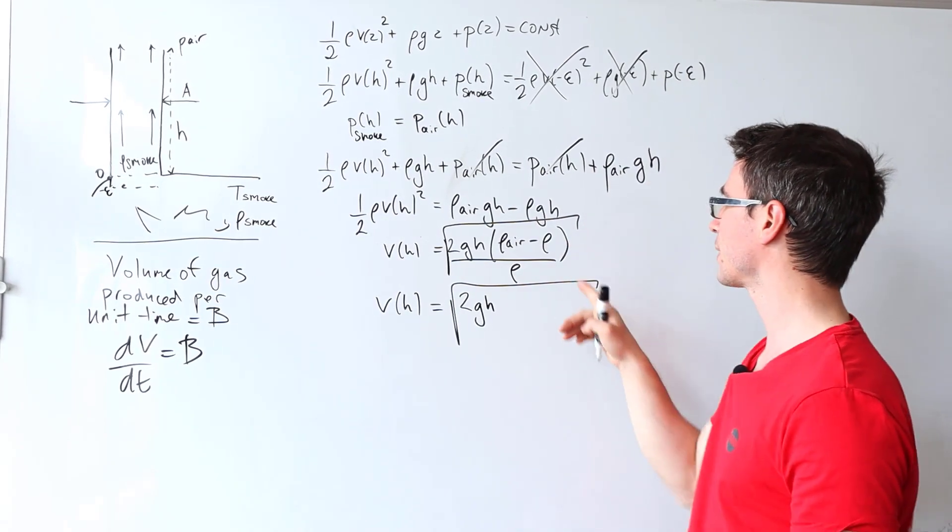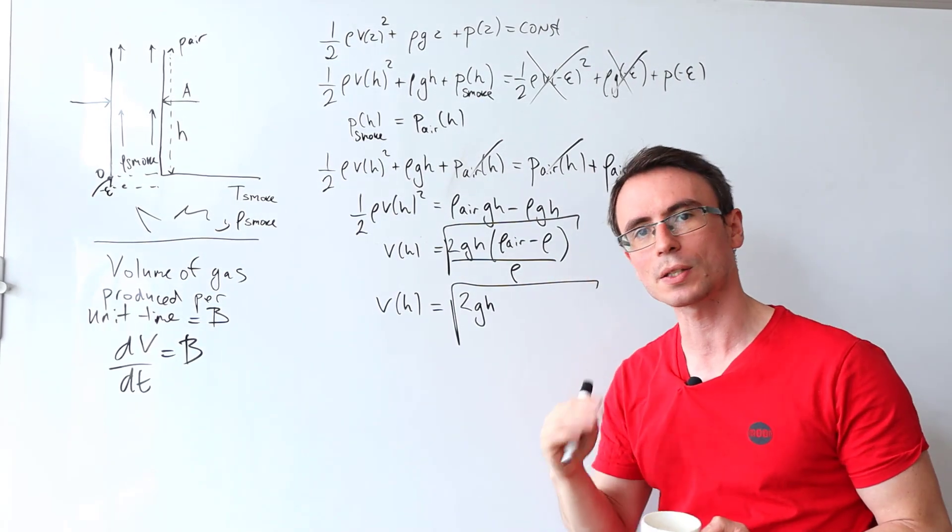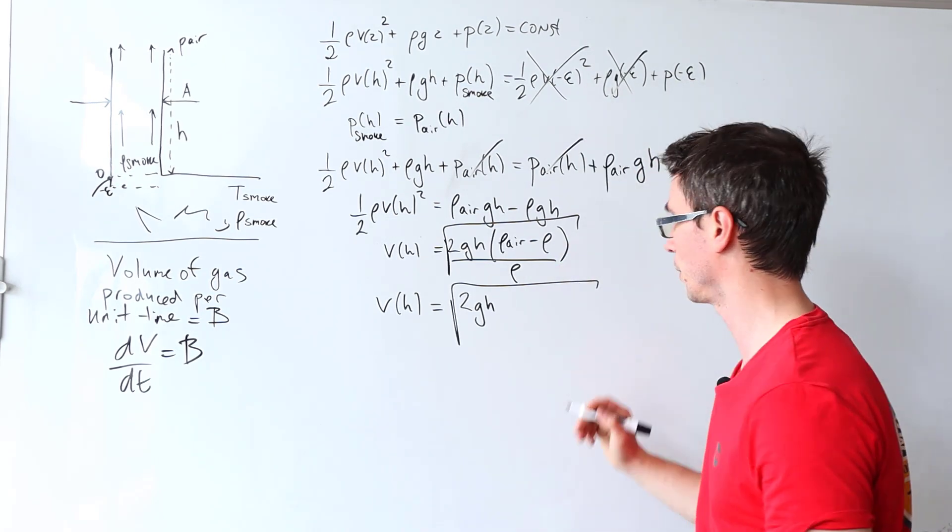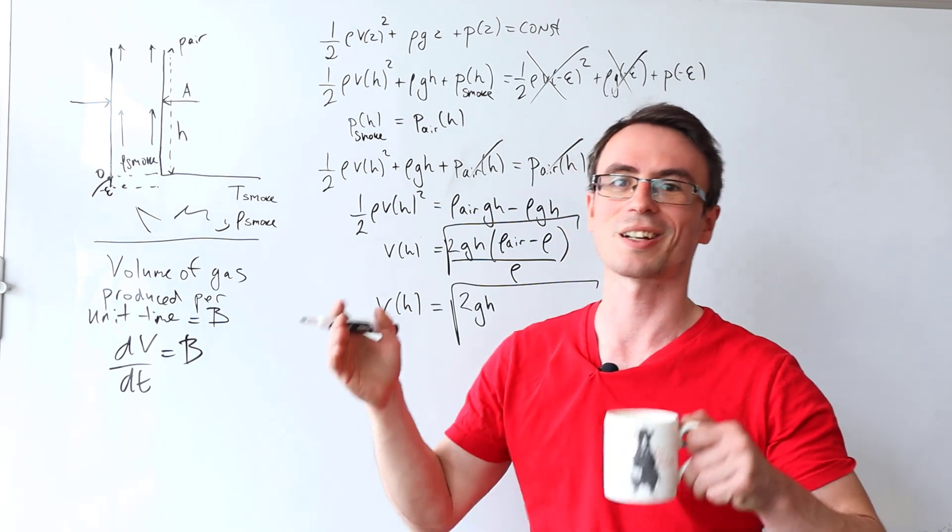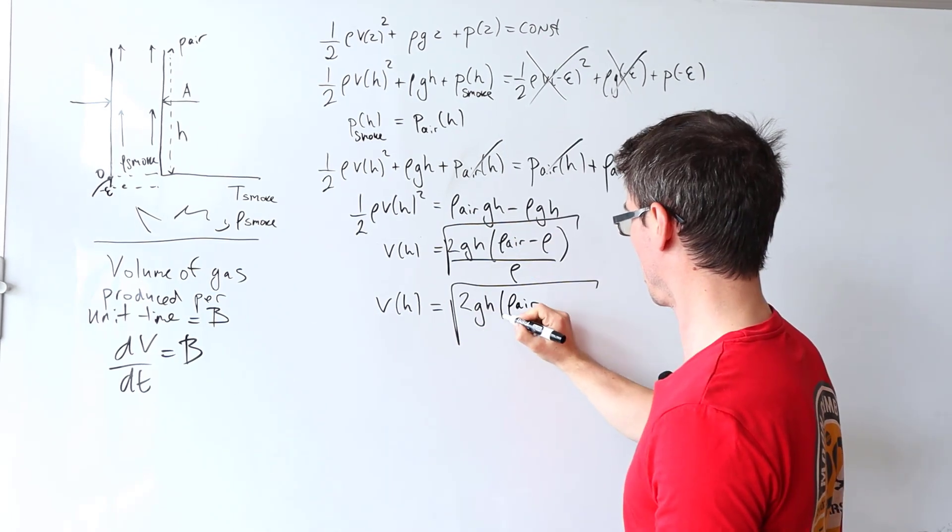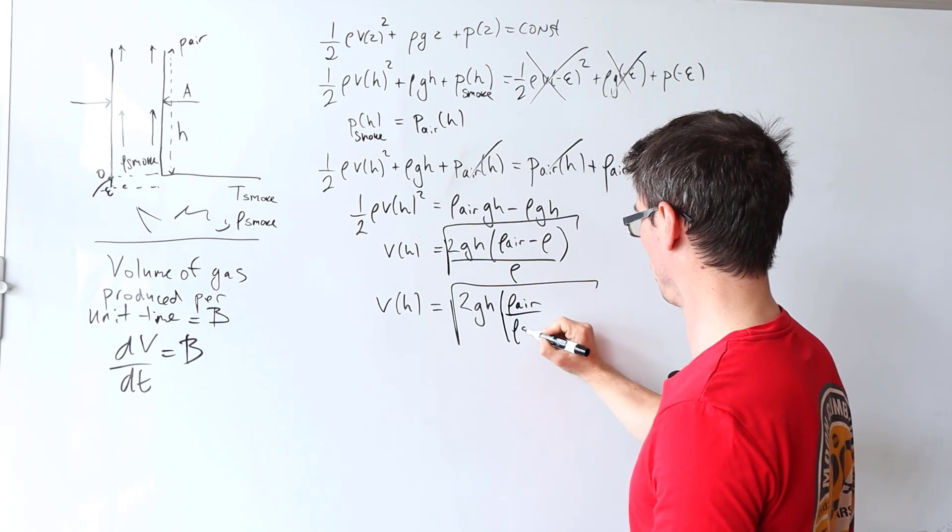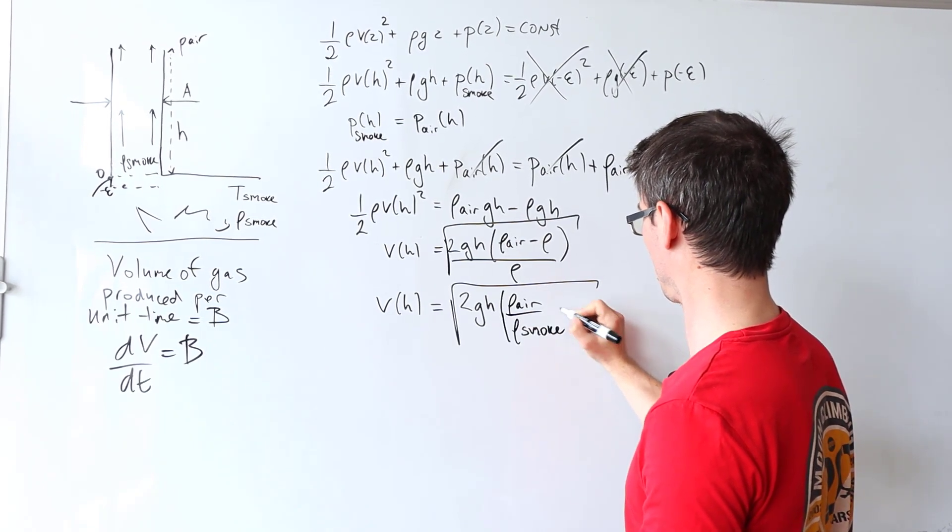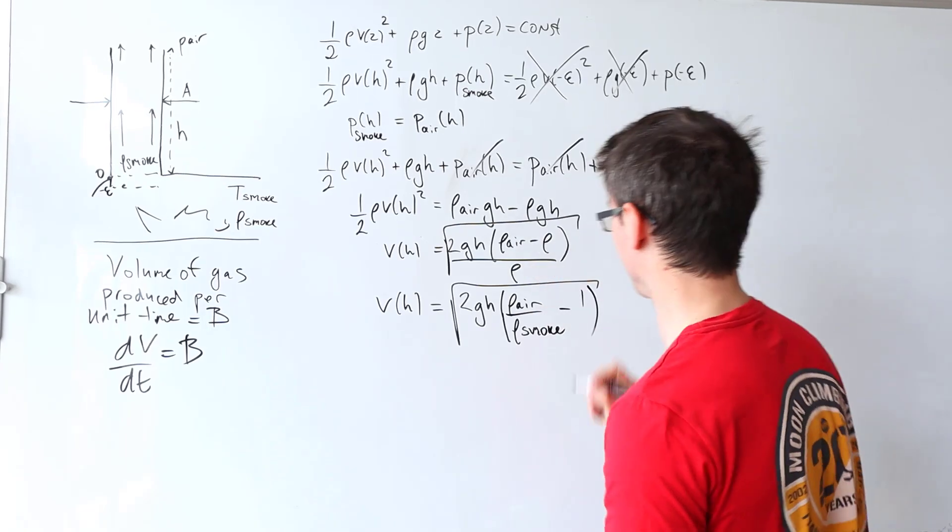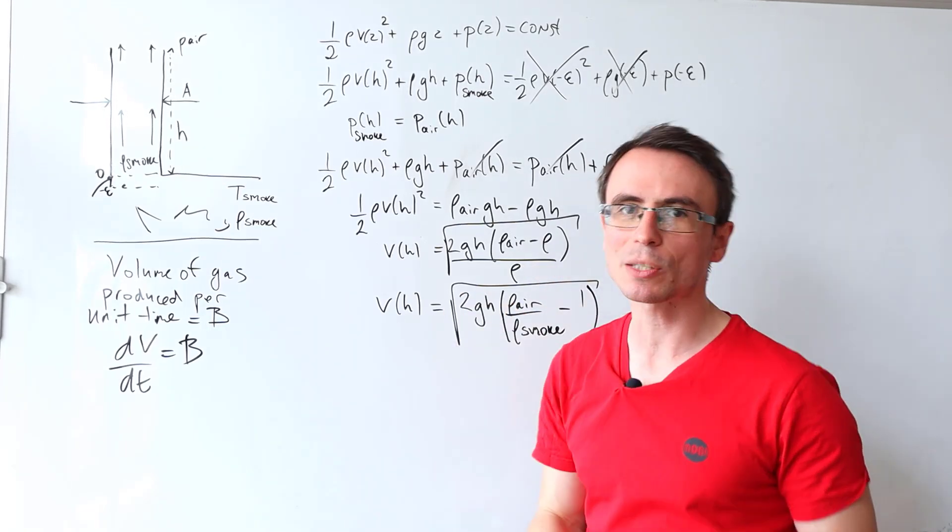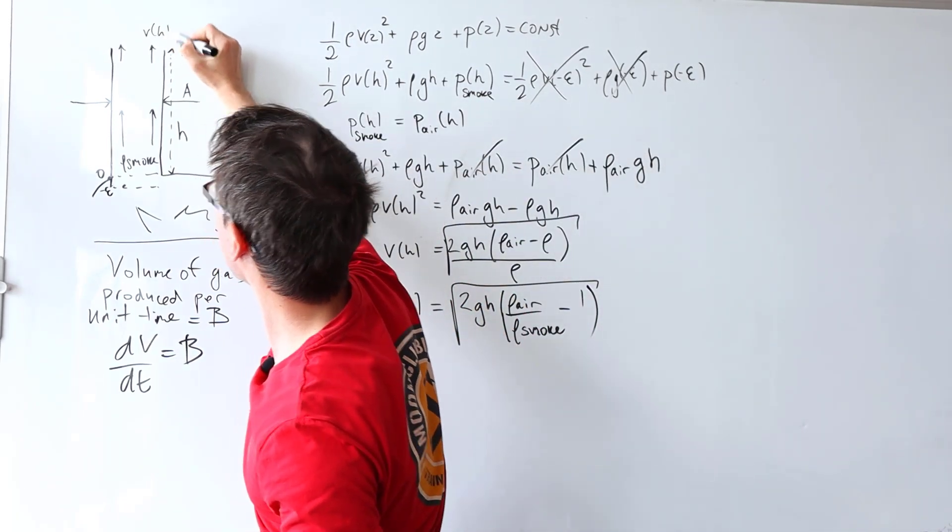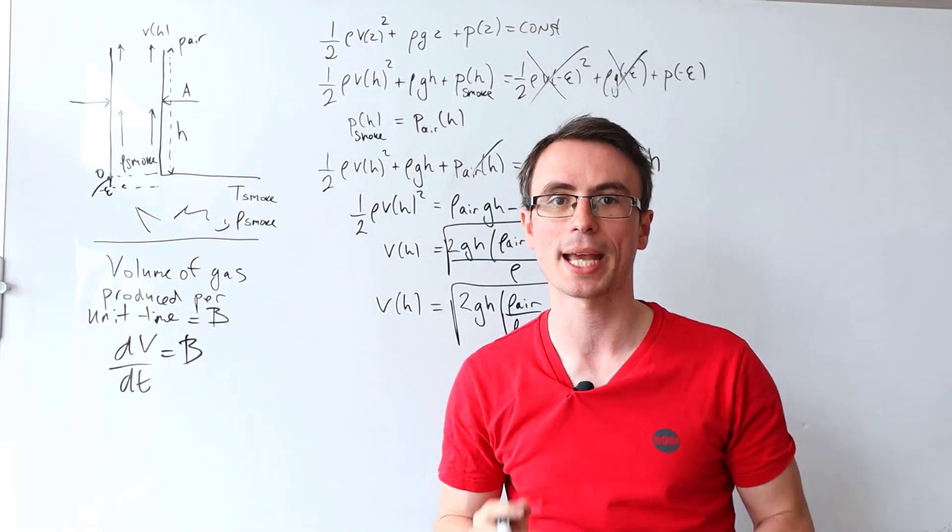Now just to be absolutely explicit that this here is the density of the smoke, I'm just going to give it a subscript. I really should have given it throughout the whole equation, but it's kind of like early morning when I'm filming this, so forgive me. Rho air divided by rho smoke, take away rho minus rho over rho is just one. Okay, and now we have an expression for the velocity as the smoke is coming out.